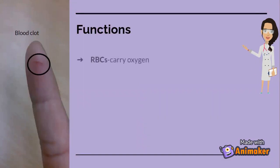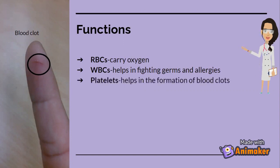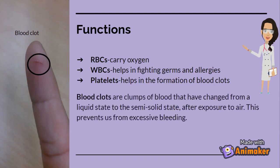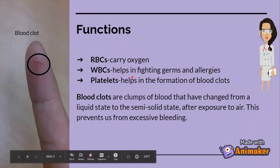Now let's learn about the functions. The red blood cells carry oxygen. Your white blood cells help with fighting germs and allergies. Your platelets help in the formation of blood clots. A blood clot is a clump of blood that has changed from a liquid state to a semi-solid state after exposure to air. This prevents us from excessive bleeding — like if you get a paper cut, that cut gets into the semi-solid state, which prevents us from losing a lot of blood.